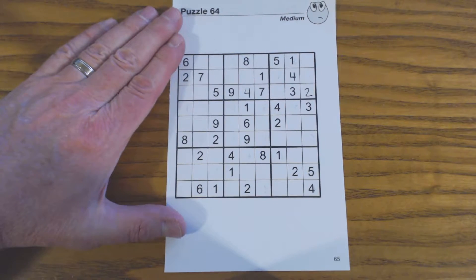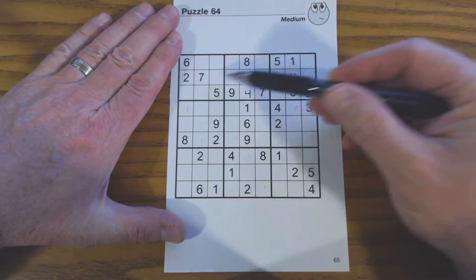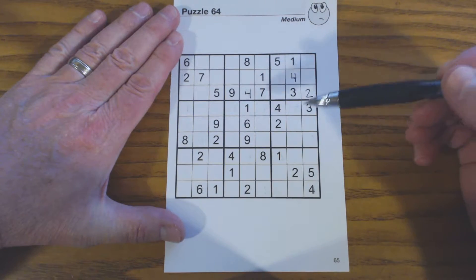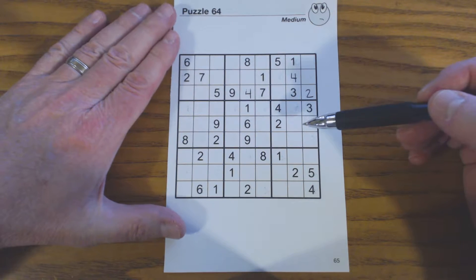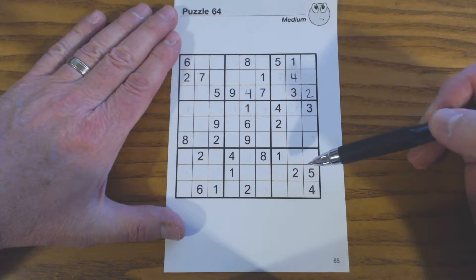First of all we're going to look through sections and look for individual numbers, and while we're doing that we'll look for twins and triplets.